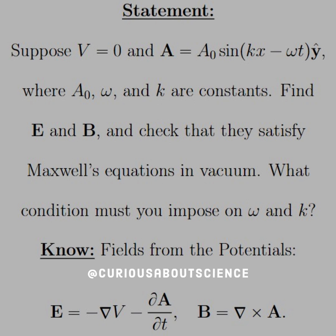Suppose V equals 0 and the vector potential equal A0 sin kx minus omega t in a y-hat direction, where A0, omega, and k are constants. Find the electric and magnetic fields and check that they satisfy Maxwell's equations in a vacuum. What condition must you impose on omega and k?